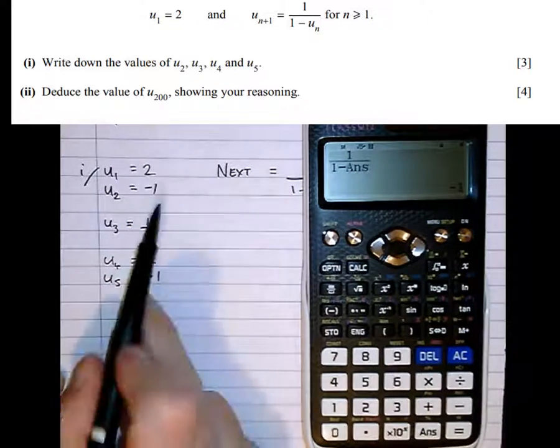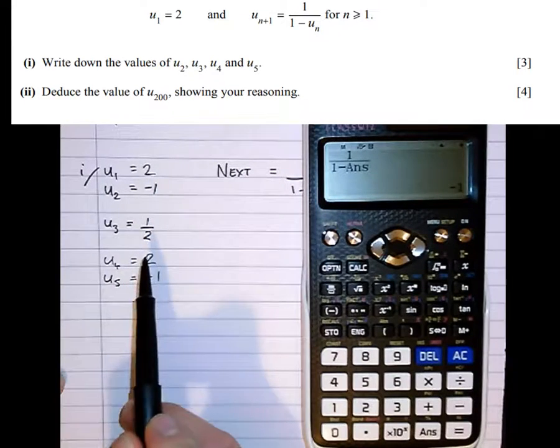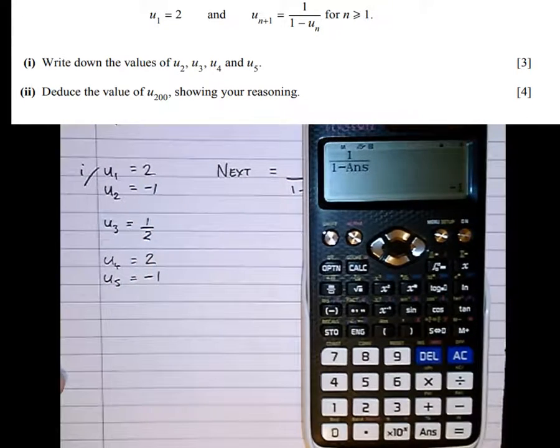Now notice that it goes round in this repeating pattern. 2, minus 1, 1 half. 2, minus 1, 1 half. So what's happening here? This sequence is called a periodic sequence, one that just cycles round the same numbers.